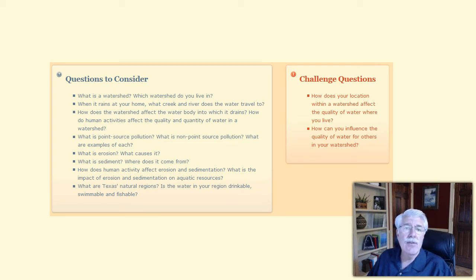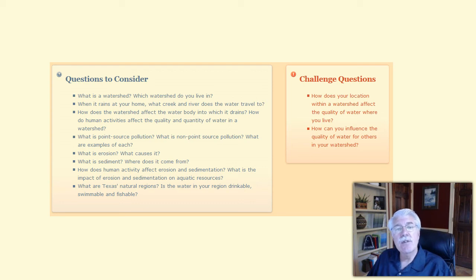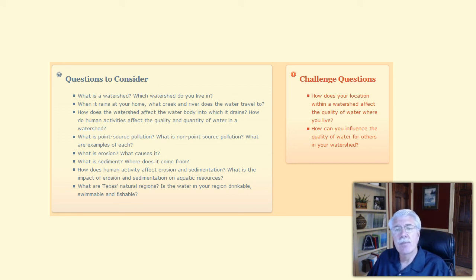How does the watershed affect the water body into which it drains? How do human activities affect the quality and quantity of water in a watershed? What is point source pollution? What is non-point source pollution? And what are examples of each? What is erosion? What causes erosion? What is sediment, and where does sediment come from?